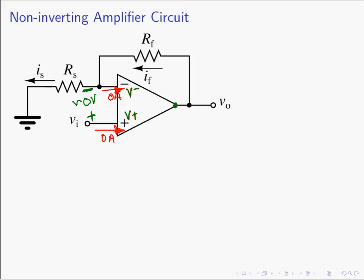We know that the voltage at this point is VN — it's connected to a VN voltage source, which basically represents a voltage source connected to ground. Since the two input terminals are virtually shorted together because of the negative feedback, we know the voltage here is VN, or VI. If we have a voltage VI at this point, and this is a ground, therefore there will be an IS current.